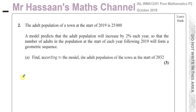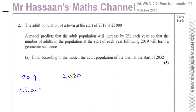So at the start of 2019, the population was 25,000. The prediction was that it would increase by 2%. When you increase something by a percentage, it's like 100% plus that percentage — so 100% plus 2% equals 102%.